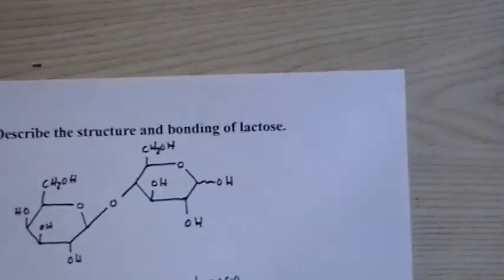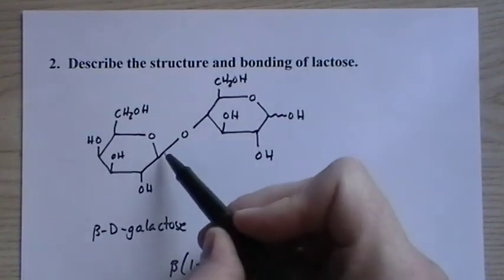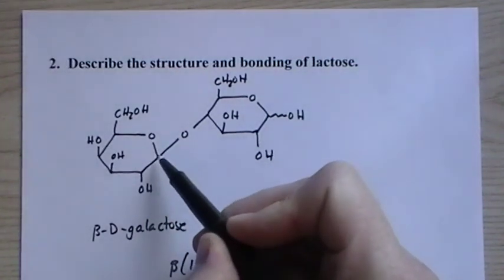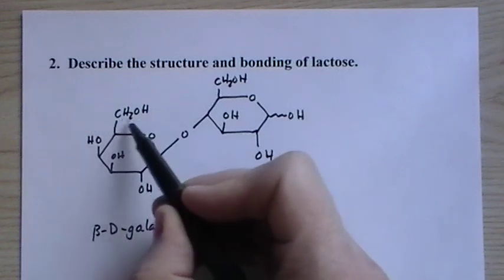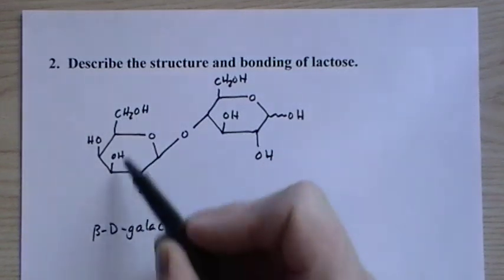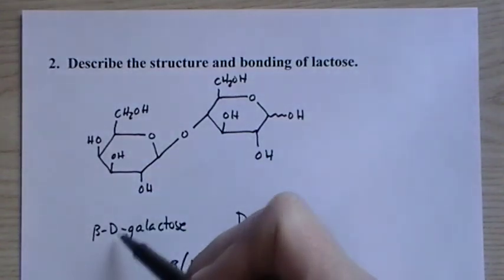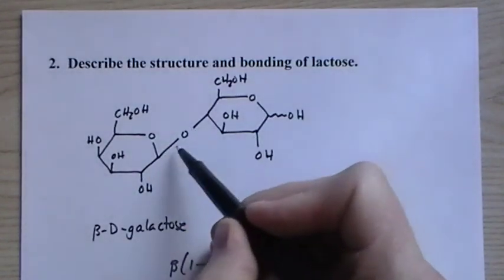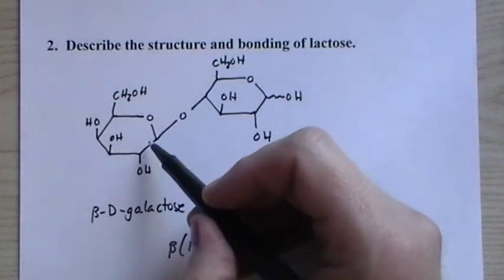For lactose, we have beta-D galactose. You can see that OH group is up. And it's not that the beta means that it's on the same side as the CH2OH, but the CH2OH is above because it's D. So that OH group is above. And you can see that that changes how these monosaccharides link together.